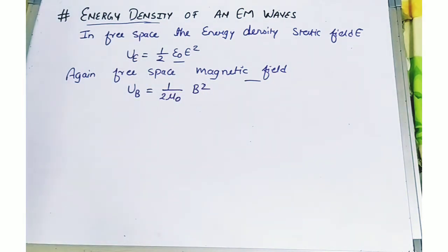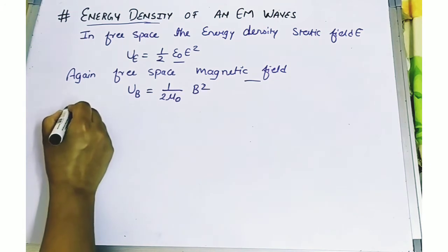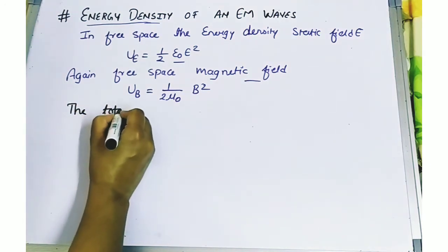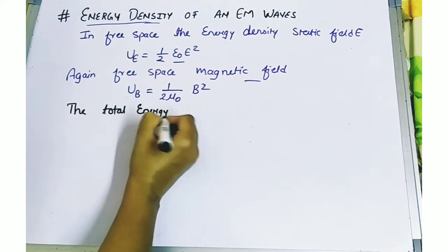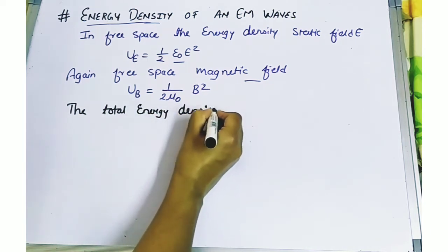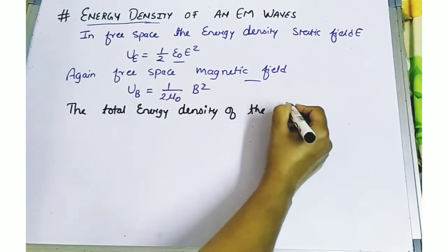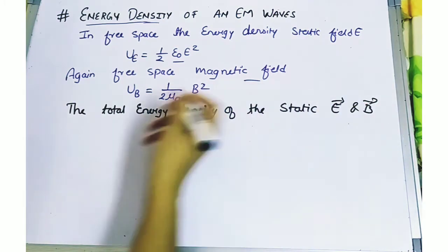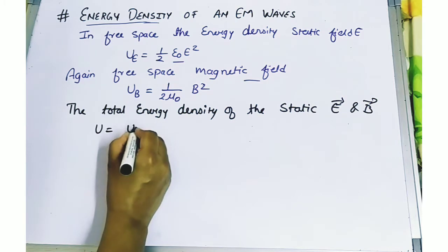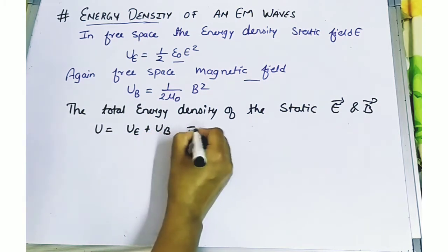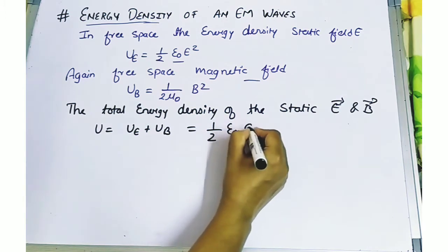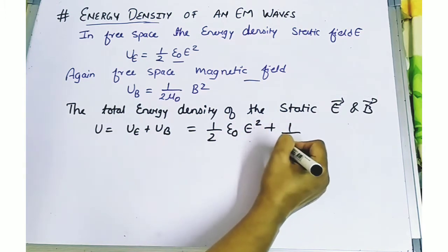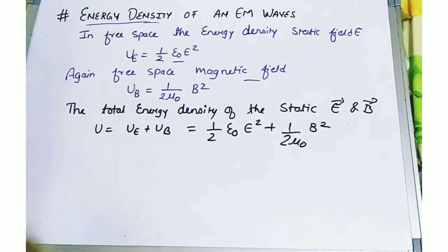When a charge is moving it produces both electric and magnetic fields, and both are accelerating. So the total energy density of the electric and magnetic fields combined is: U equals UE plus UB, which is half of epsilon naught E squared plus half of mu naught B squared.